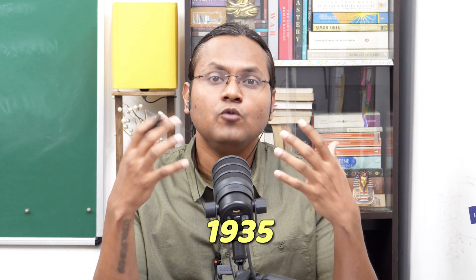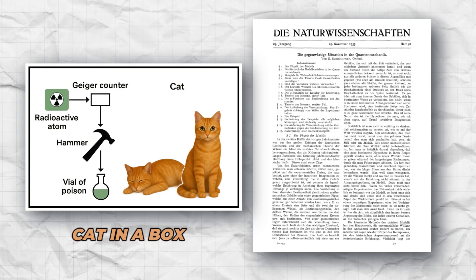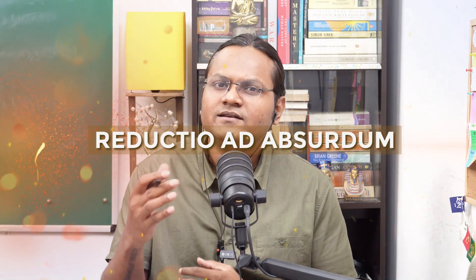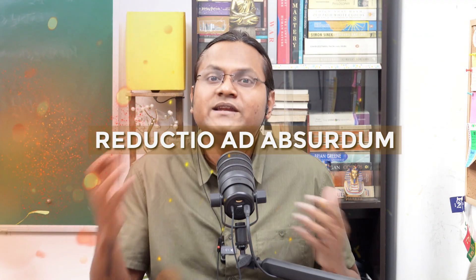But just 10 years later, in 1935, he wrote a few more papers critiquing the interpretations of his own theory. He gave the very famous cat-in-a-box thought experiment. This is not a real experiment. There are no real cats involved, but it was given as a reductio ad absurdum to highlight the absurdities or limitations of quantum mechanics, especially when applied to the classical world.